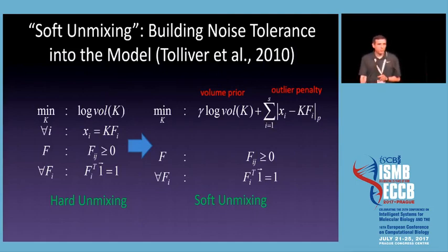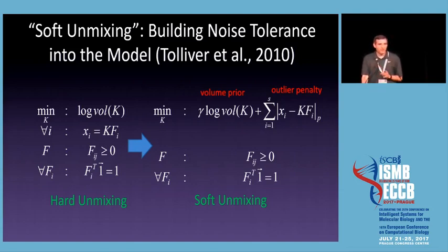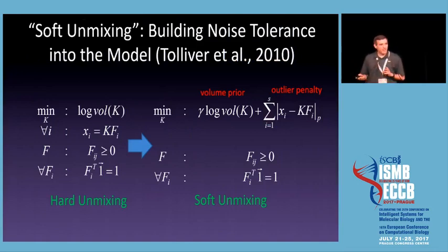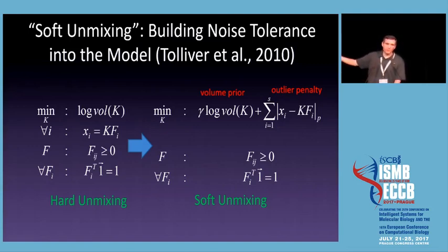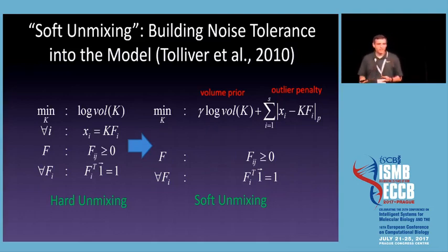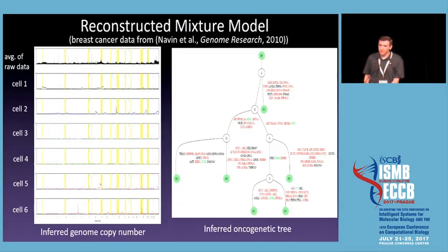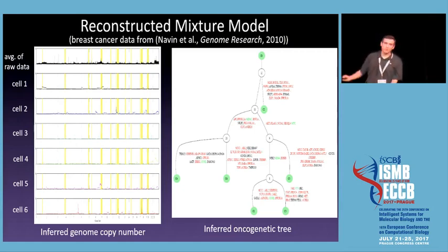If you do this directly it doesn't work well on genomic data, because genomic data is very noisy and these geometric approaches can be quite sensitive to outliers. You can pose this as what we call hard unmixing — finding a minimum volume simplex bounding your data — but that tends to be very noise-sensitive. In practice, what you really want to do is what we called soft unmixing, building in some noise tolerance so points can be somewhat outside your simplices. By balancing the fit of the simplex against its quality you can get a much better fit. That kind of approach can be used to get an approximate model of major states of progression over tumor development, which you can then use to build what's called an oncogenetic tree.